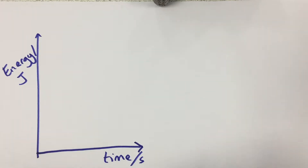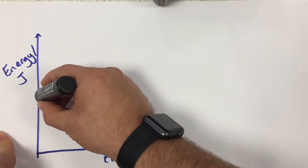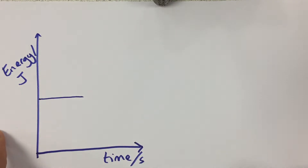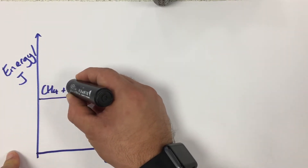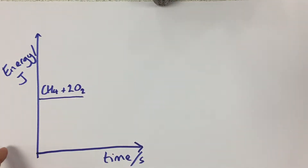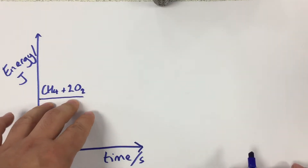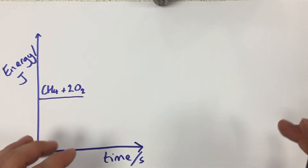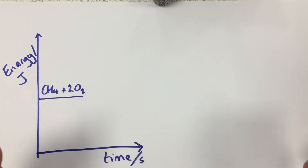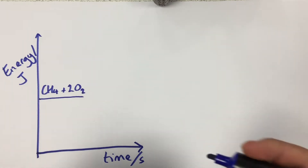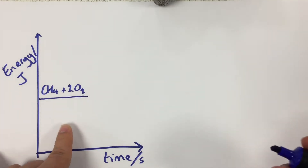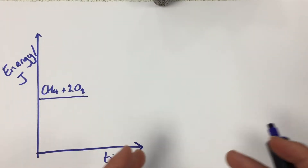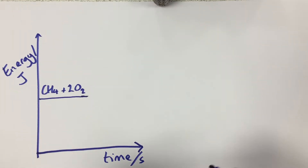Imagine I have two chemicals. I'll use the example of methane and oxygen, so if I'm doing a combustion reaction, those two chemicals — the methane and the oxygen — have energy stored in their bonds, so they have a certain amount of energy at the start as individual reactants. When they react together in a combustion reaction, just like when we use a Bunsen burner, they're going to form products which for this reaction will be carbon dioxide and water — a typical combustion reaction.